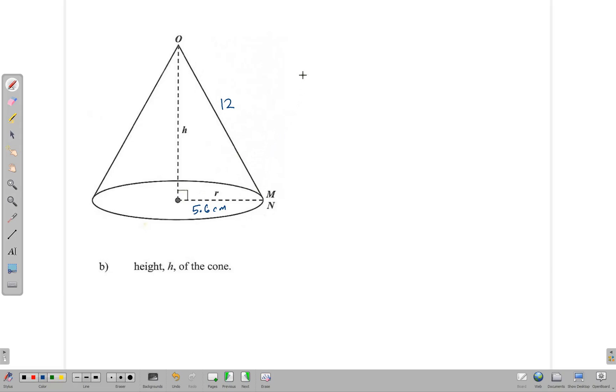We can say h² + 5.6² = 12². That tells us that h² plus, if you want to use your calculator here to write this out, 31.36 equals 144. Now we subtract, h² = 144 - 31.36.